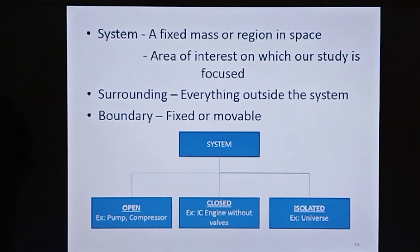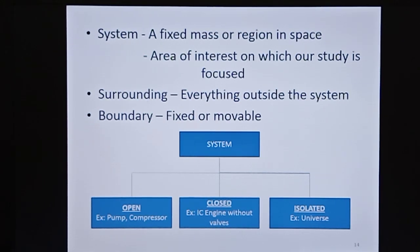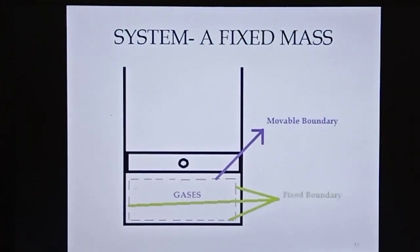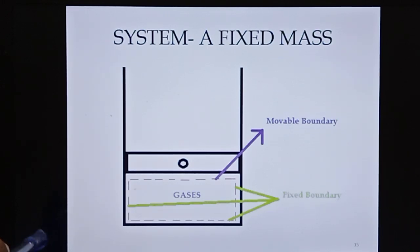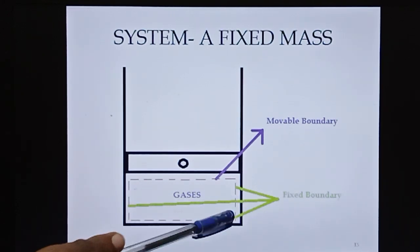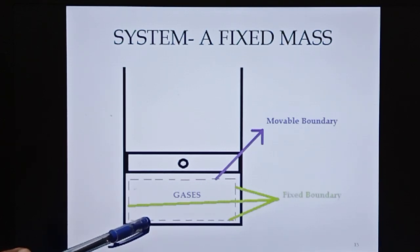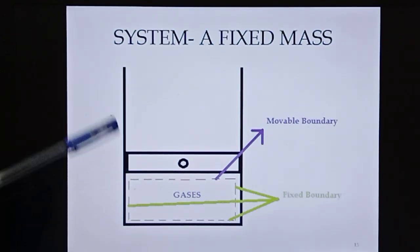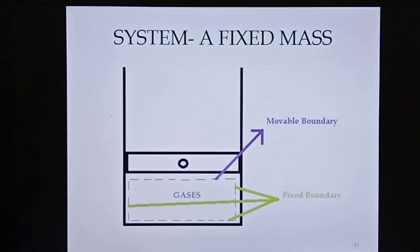The surrounding is everything outside the system. The boundary separates the system from its surroundings. A boundary can be a fixed boundary or a mobile boundary. In the case of an internal combustion engine piston-cylinder arrangement, the upper region has a mobile boundary as the piston moves. The boundary region moves, making it a mobile boundary. A system can have both mobile and fixed boundaries.